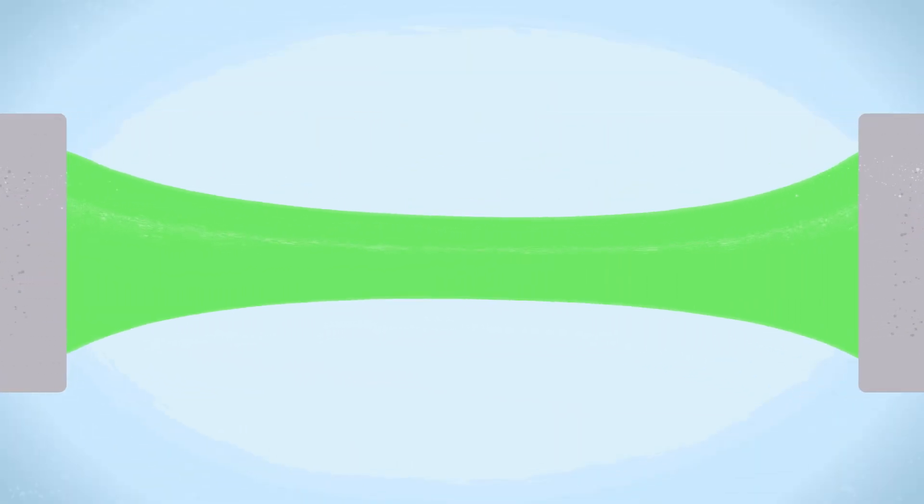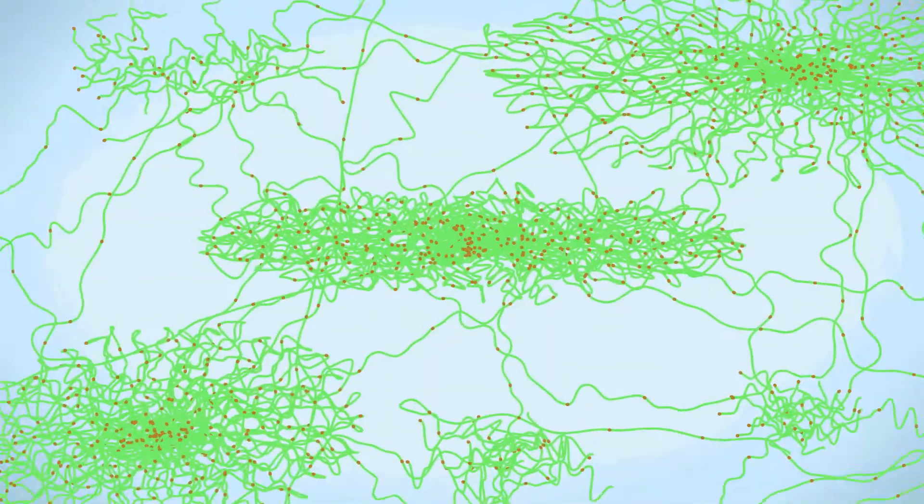To understand how associating polymers will behave during manufacturing, O'Connor simulated their behavior during elongational deformation. He found that elongation caused the polymers to behave in two very different ways.